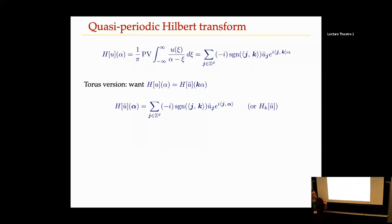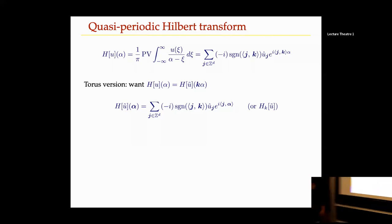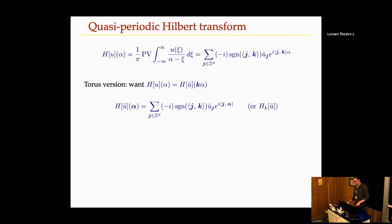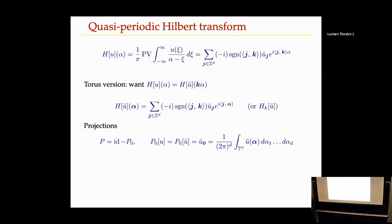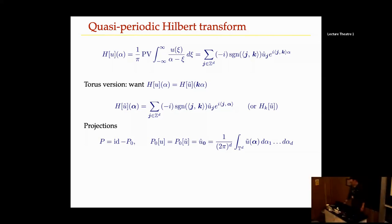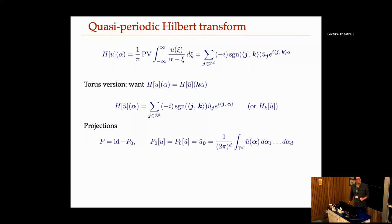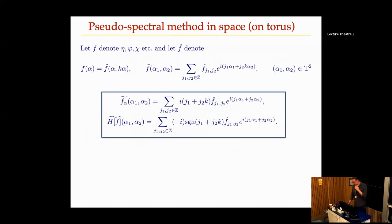Slicing through the torus Hilbert transform gives the actual Hilbert transform of the previously extracted function — making it very quick to compute the quasi-periodic Dirichlet-Neumann operator. For projections, you integrate over the torus as a higher-dimensional integral, equivalent to the limit as a goes to infinity of the integral from minus-a to plus-a divided by 2a of the one-dimensional function.